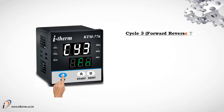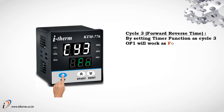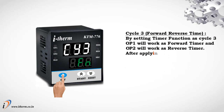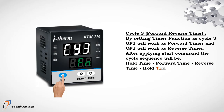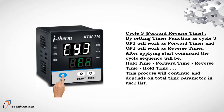Cycle 3 — forward/reverse time. By setting timer function as Cycle 3, Output 1 will work as a forward timer and Output 2 will work as a reverse timer. After applying the start command, the cycle sequence will be: hold time, forward time, reverse time, hold time. This process will continue depending on the total time parameter in the user list.